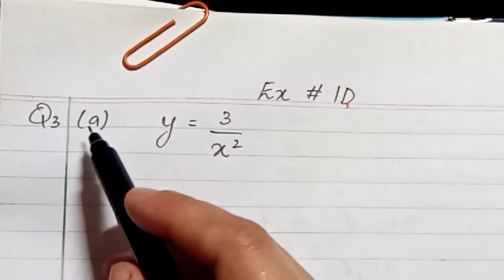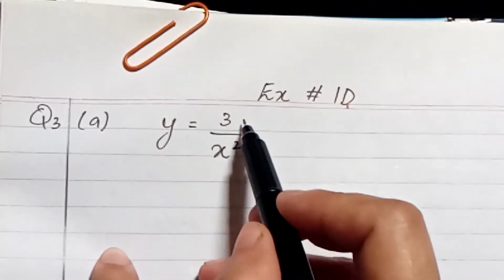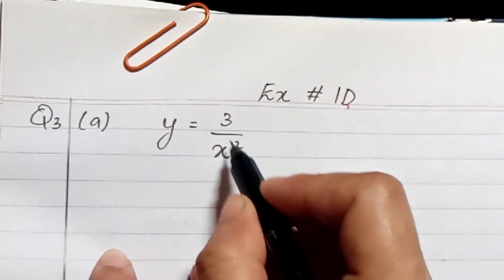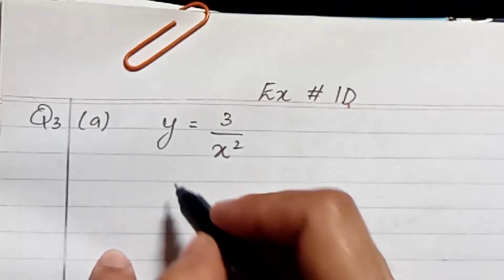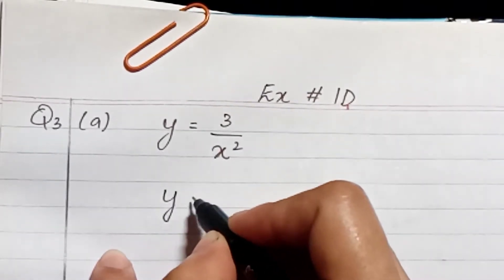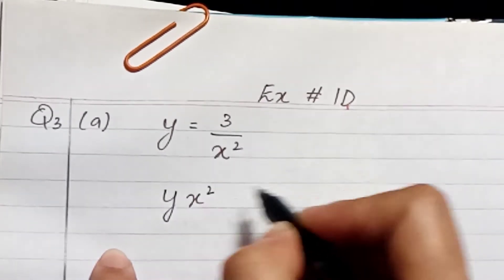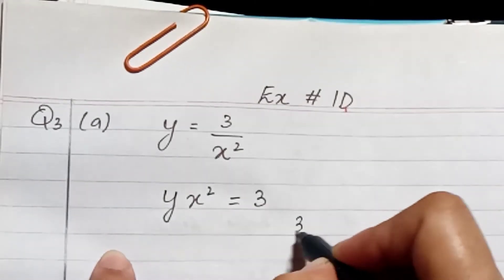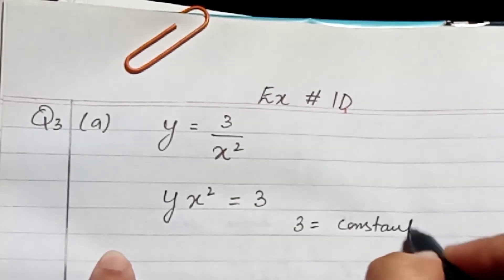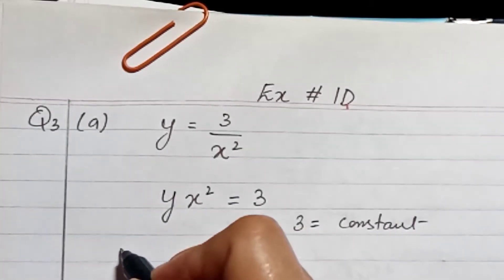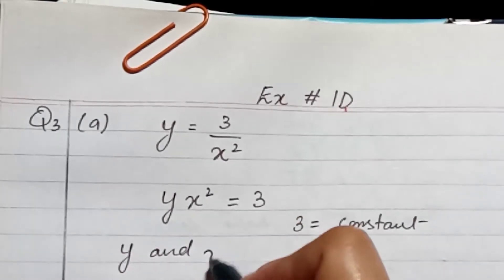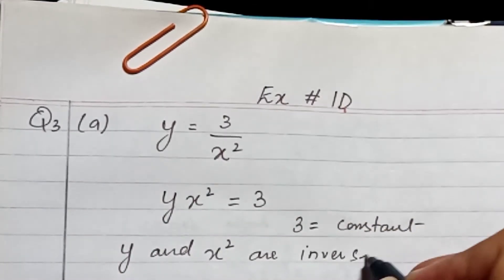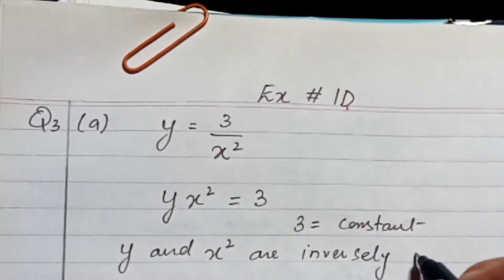In part (a) of question three, we have y equals 3 upon x². Moving x² to the other side gives y·x² equals 3, and since 3 is a constant, y is inversely proportional to x², meaning y and x² are inversely proportional to each other.